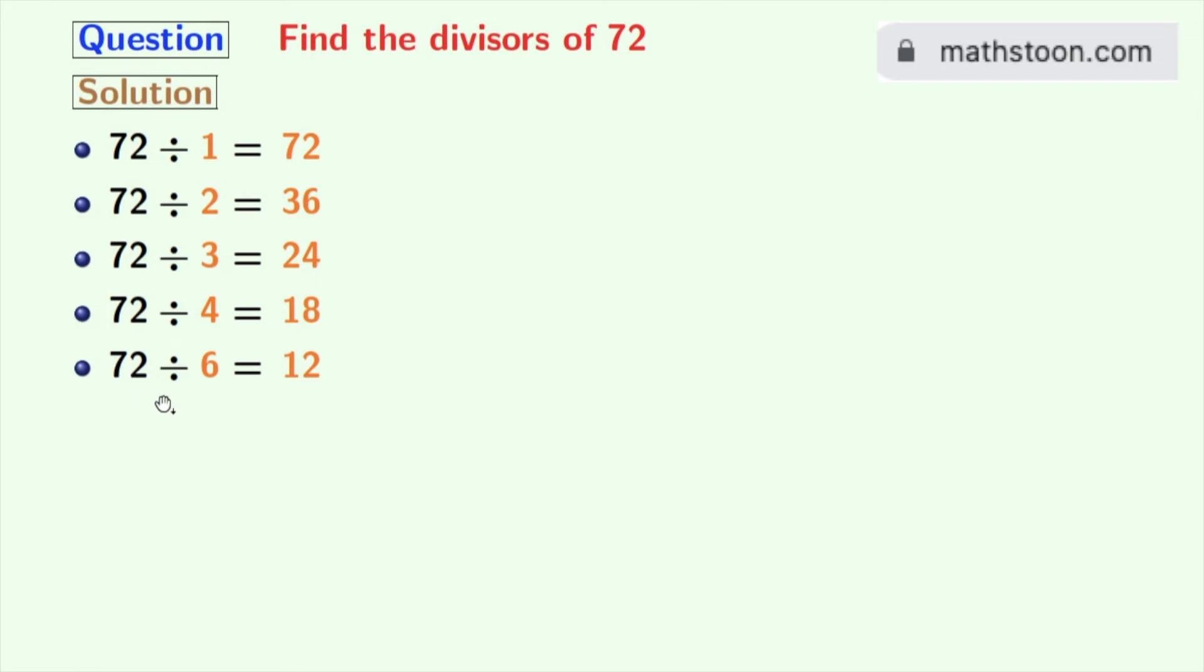Next number 7 does not divide 72. So we will try for 8. 72 divided by 8 is equal to 9. So 8 and 9 are the divisors of 72.